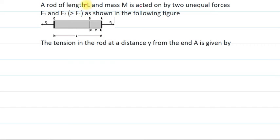Hello students, so here I am going to solve a problem. In this problem we have a rod of length L and mass M acted on by two unequal forces F1 and F2 as shown in the figure, and we have to calculate the tension in the rod at a distance y from end A.